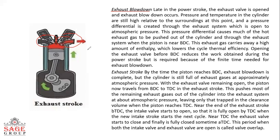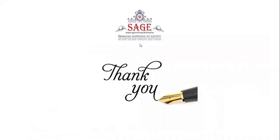When the piston reaches TDC, the exhaust valve is finally closed and the intake valve is opening and will completely open after some time as the piston starts moving away from TDC. During this, one moment occurs in which the intake and exhaust valves are both simultaneously open — this particular instant is known as valve overlap. This is how the four strokes take place in a four-stroke SI engine. In the next class, we will discuss the four-stroke CI engine. Thank you.